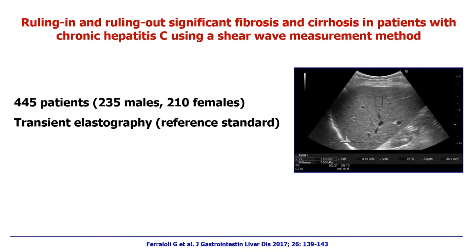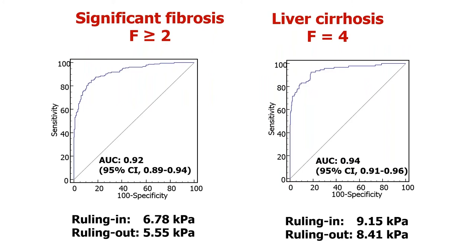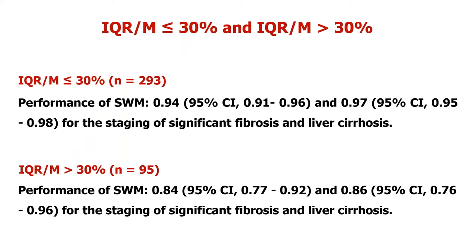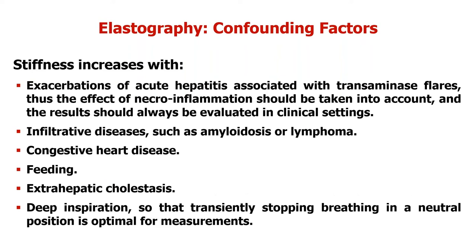Cut-offs for ruling in and ruling out significant fibrosis and liver cirrhosis have been assessed in patients with chronic hepatitis C in a series of more than 500 patients using transient elastography as the reference standard. There was high accuracy in assessing significant fibrosis and liver cirrhosis. The interquartile range over median is a very important quality criterion — performance was high when respected, and lower when the IQR/median exceeded 30 percent.